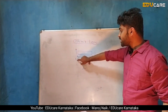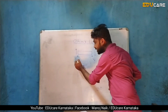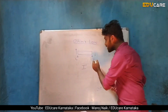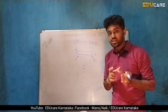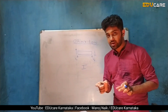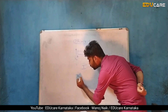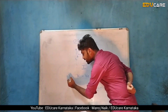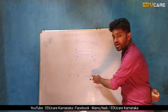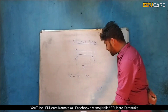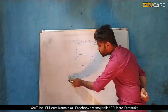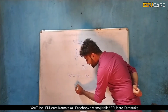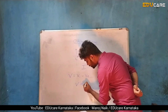V1 is the electrostatic potential energy at point A, and V2 is the electrostatic potential energy at point B. The potential difference is V1 minus V2. So V equals V1 minus V2, and V is proportional to current I.